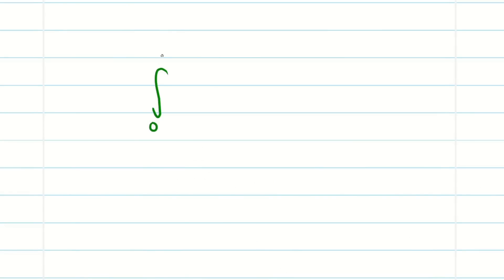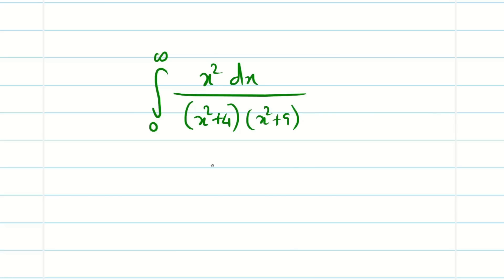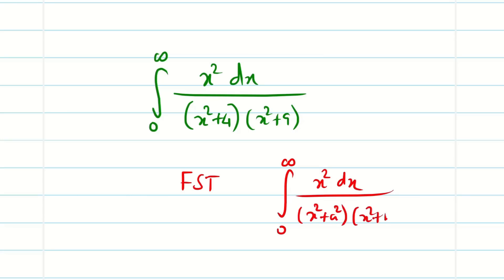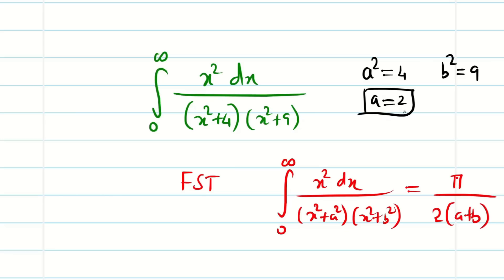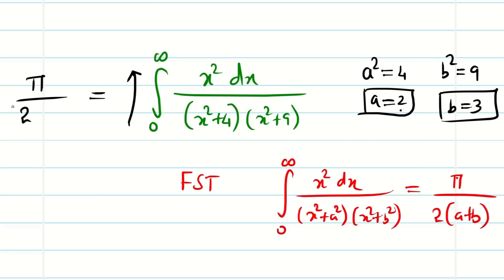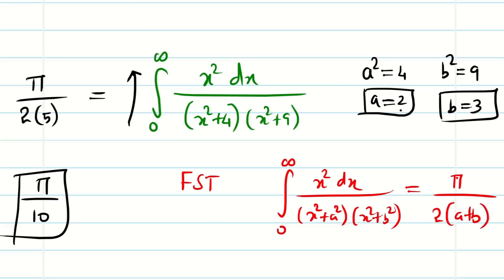In the same way, if they ask ∫₀^∞ x² dx/((x²+4)(x²+9)), derive the general form using Fourier sine transform: ∫₀^∞ x² dx/((x²+a²)(x²+b²)) = π/(2(a+b)). Here a²=4, b²=9, so a=2, b=3. The answer is π/(2(2+3)) = π/10.